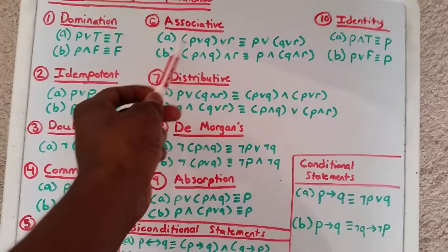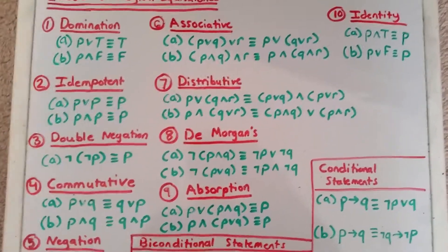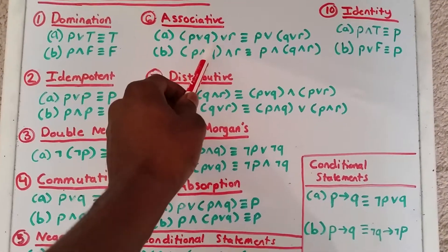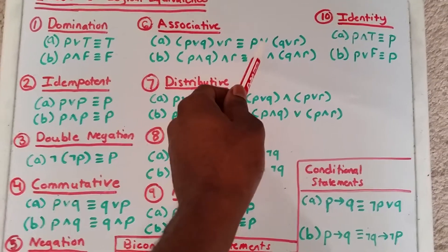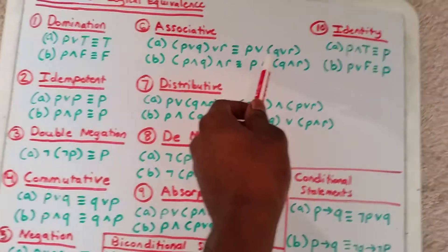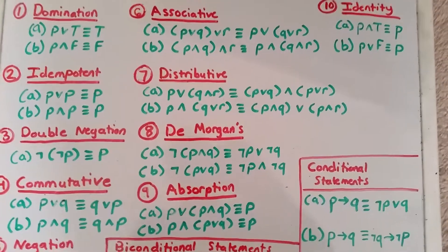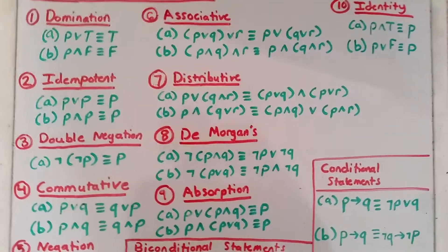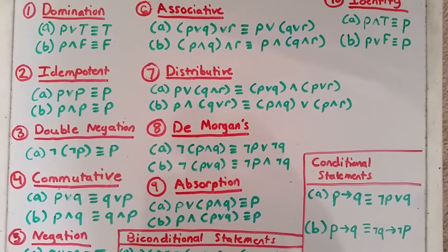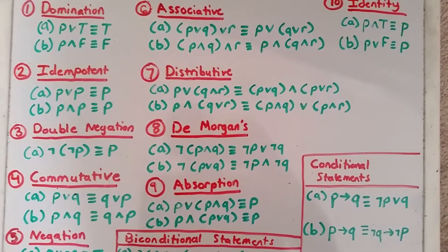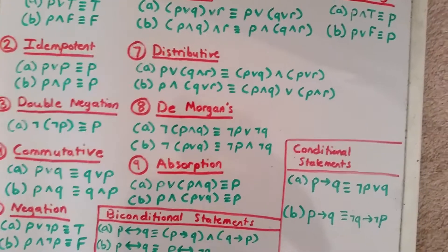Next, we have the associative law. It states that P or Q or R is logically equivalent to P or Q or R — you can just move those around. And then the second one is P and Q and R is logically equivalent to P and Q and R.